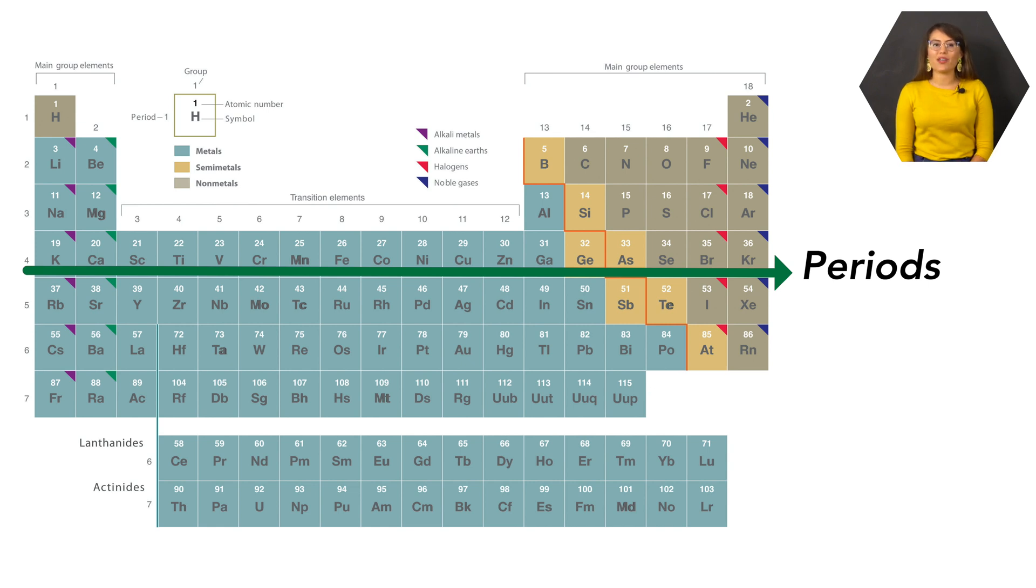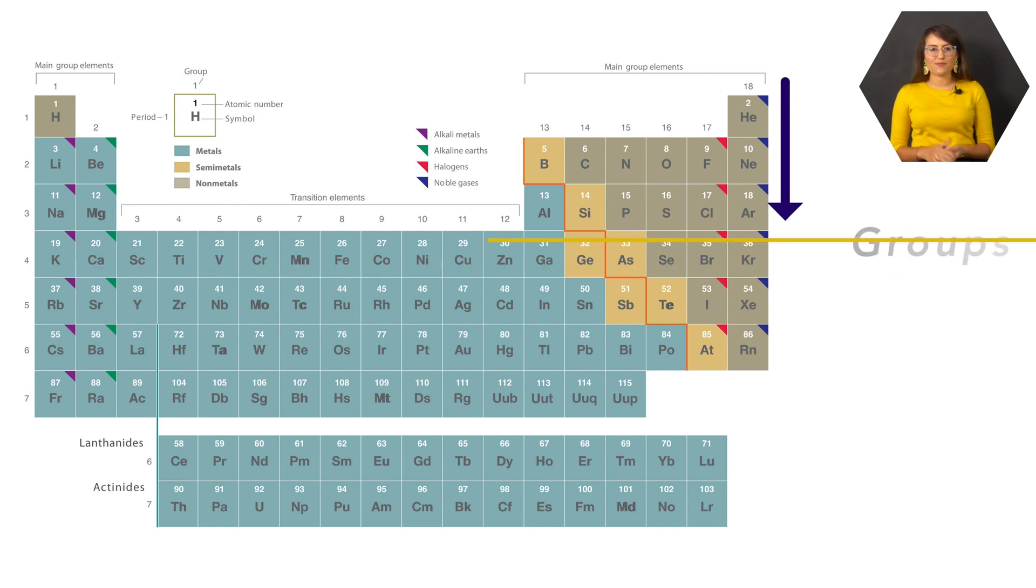As you can see, the periodic table is separated into rows, which are known as periods, and periodic columns are referred to as groups. Some of these groups also have special names that we can use to refer to them.